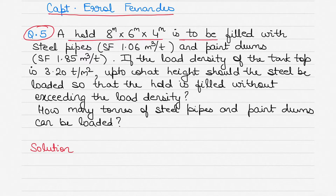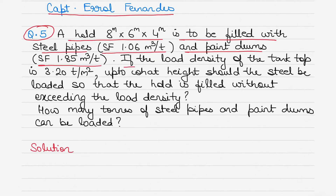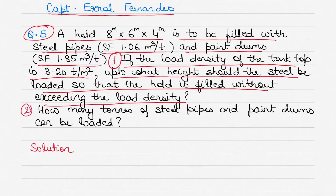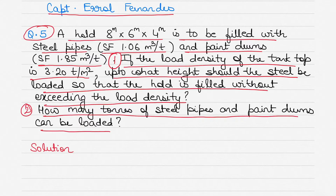The question is: there is a hold 8 by 6 by 4 meters, which is to be filled with steel pipes with a storage factor of 1.06 cubic meters per ton, and paint drums with a storage factor of 1.85 cubic meters per ton. If the load density of the tank top is 3.20 tons per square meter, up to what height should the steel be loaded so that the hold is filled without exceeding the load density? The second thing to find out is how many tons of steel pipes and paint drums can be loaded in the cargo hold.